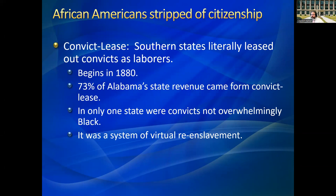The first way was through something called the convict lease system. In the South, governments started using the convict lease system. There were efforts to cut government spending — if governments weren't going to spend money on public schooling, they certainly weren't going to spend money on prisons. In 1880, Alabama came up with a new revenue source: they began leasing their convicts to private businesses. They leased so many convicts out that 73% of all of Alabama's state revenue came from the convict lease system.